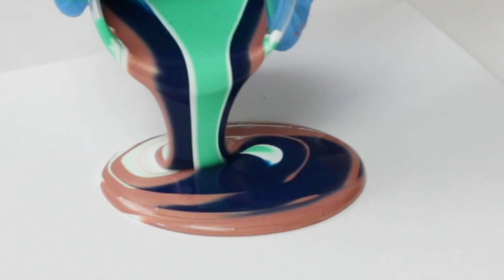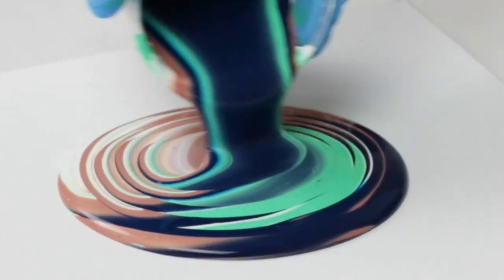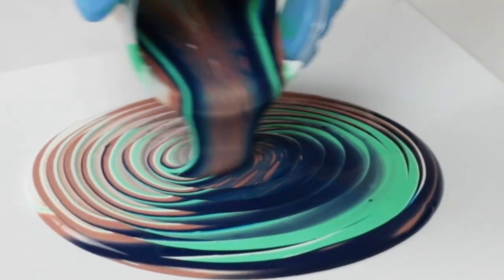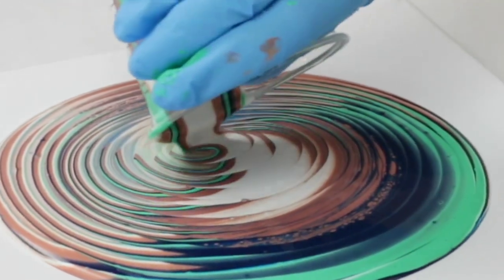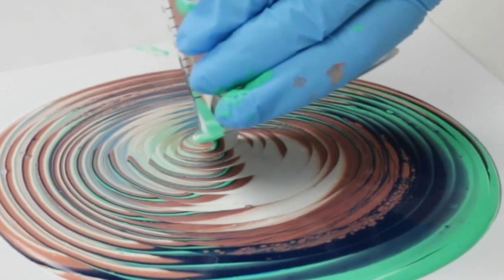I'm doing a pretty simple technique here. This is a tree ring. I fill up my cup with enough paint to cover my canvas. I'm using a 10 by 10 inch canvas, which takes a little bit over six ounces of paint.